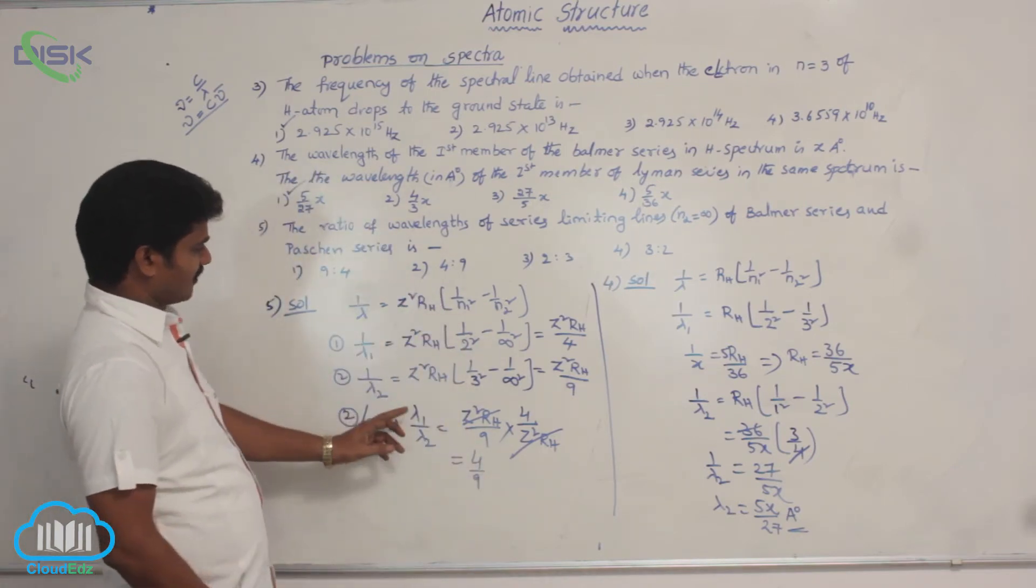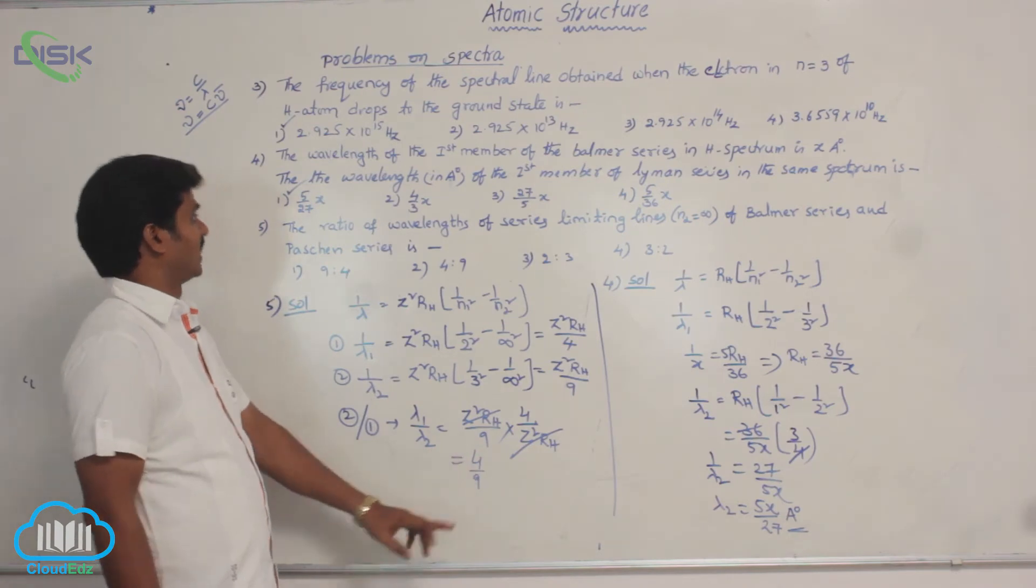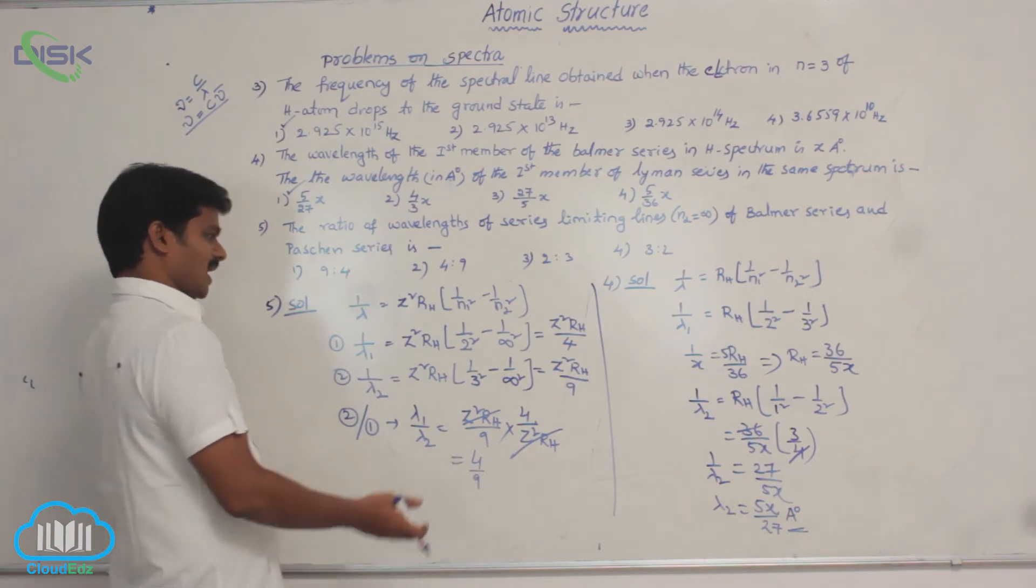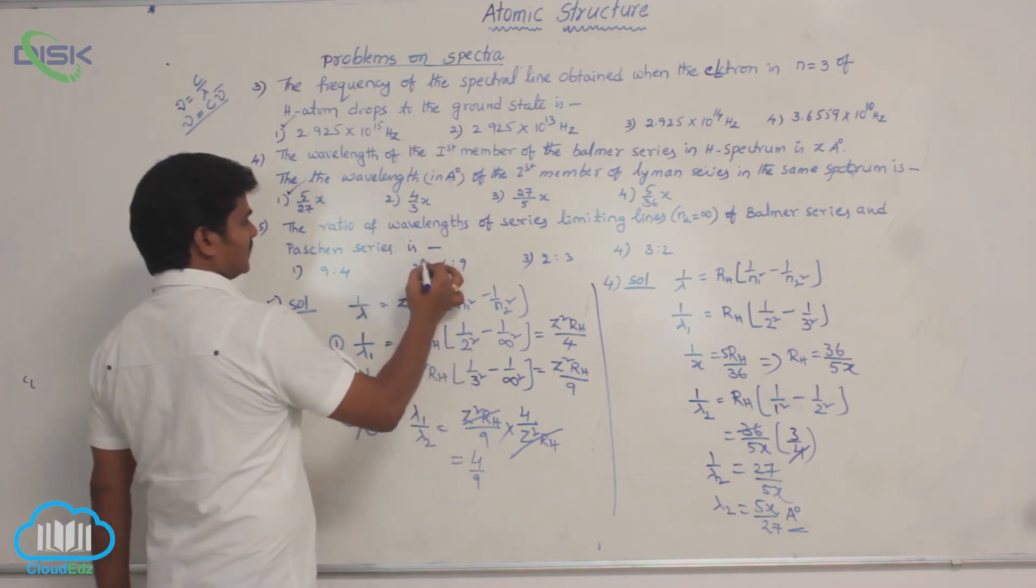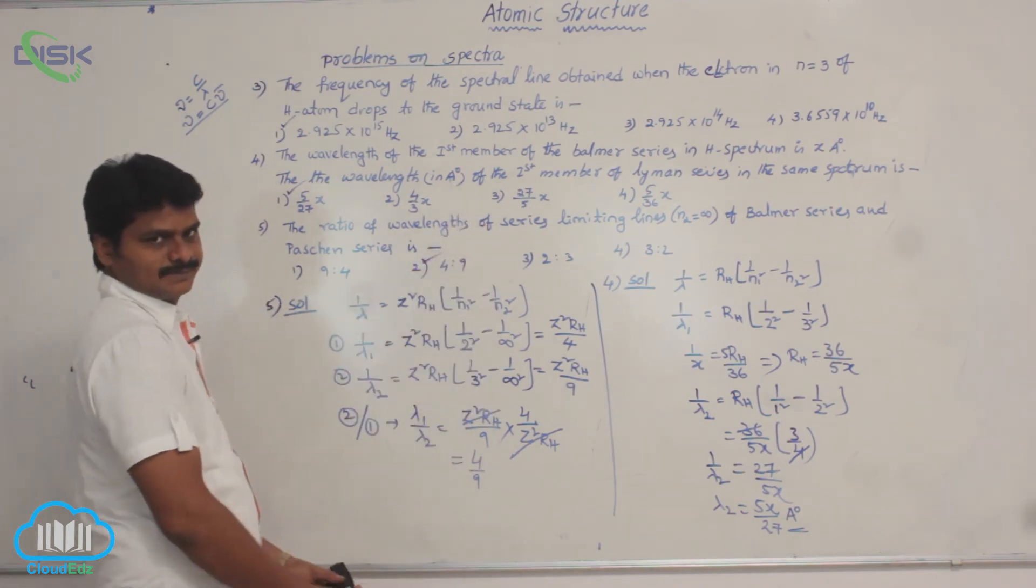So lambda 1 by lambda 2 means 4 by 9. So 4 by 9, where is it? 4 by 9 means 4 is to 9. It is in second option. Got it?